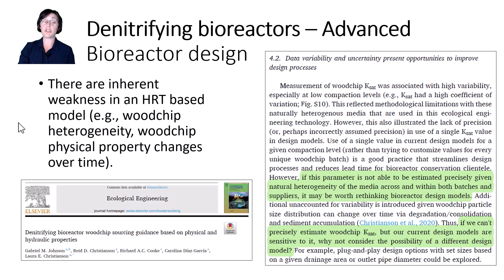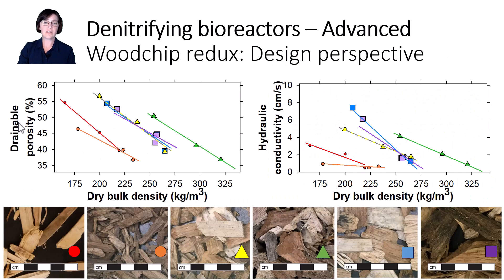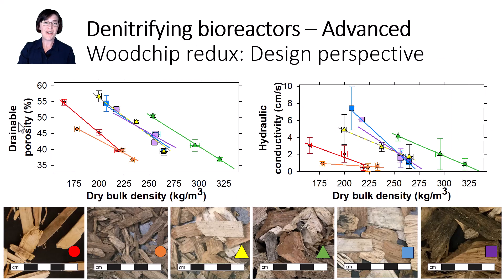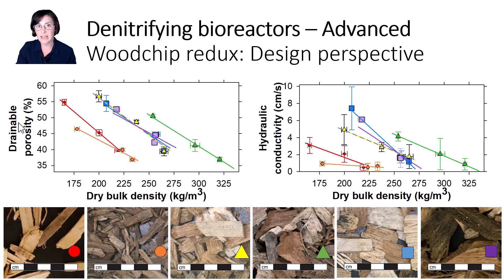Coming back to something I mentioned in the last lesson, there are inherent weaknesses in any design model that's based on properties that not only change over time, but are difficult to precisely estimate. And while I can show you nice means with each individual point, when I actually show you the error bars — especially for KSAT — they're all over the place. If we cannot precisely estimate these woodchip parameters that are changing over time, and our design models are sensitive to these parameters, why not consider the possibility of different design models?